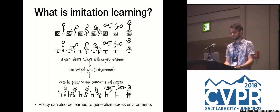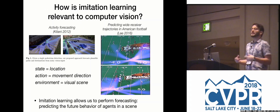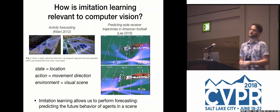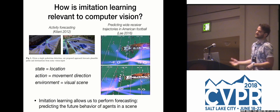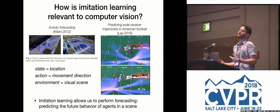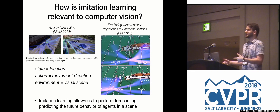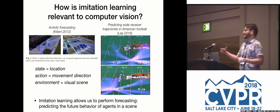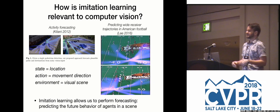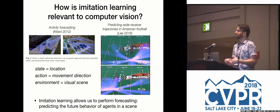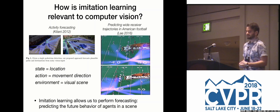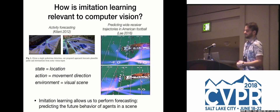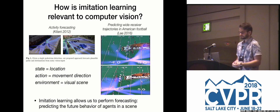How is imitation learning related to computer vision? One of the main motivations is to model agents to predict the future. Often in computer vision we have the passive setting, meaning the policy we learn can't collect new data in the original environment, but can be executed in a simulated environment to predict what the agent will do. For example, learning how pedestrians walk in surveillance videos, or how wide receivers behave in overhead videos, has been applied to forecast future behavior.